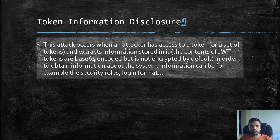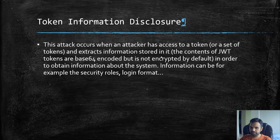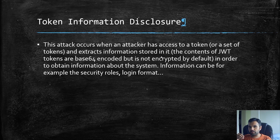Token information disclosure: this attack occurs when an attacker has access to a token or set of tokens and extracts information stored in it. The JWT payload may contain user ID, user role, or other context. By default, JWT uses Base64 encoding — not encryption — so anyone can decode it.